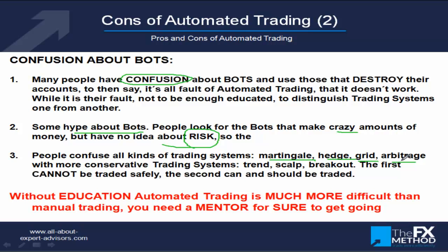If you're approaching automated trading because you think it's going to be a quick fix, that's the wrong way. We do only conservative trading systems: trending, scalping, breakout — never with martingales, never with hedge systems, never with grid trading. We don't do arbitrage between brokers without stop losses. To go into automated trading without education is much, much more difficult than in manual trading. There's so much info online about manual trading strategies, but not so much about automated trading. There are not so many mentors who will give you the whole thing.